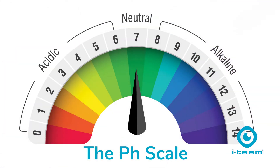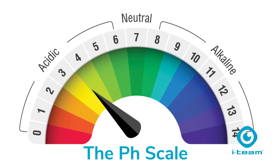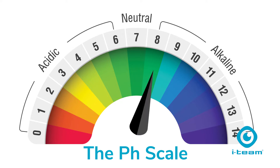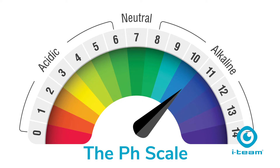Simply speaking, the pH scale shows how acidic or alkaline a chemical is. A pH of 7 is neutral. Anything below 7 is acidic and above 7 is alkaline.